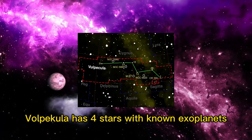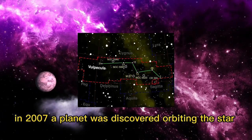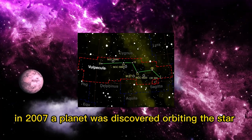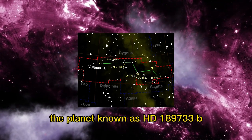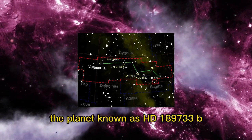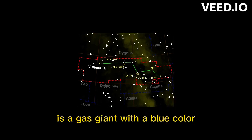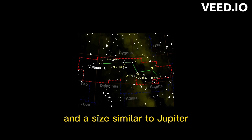Vulpecula has four stars with known exoplanets. In 2007, a planet was discovered orbiting the star HD 189733. The planet, known as HD 189733b, is a gas giant with a blue color and a size similar to Jupiter.